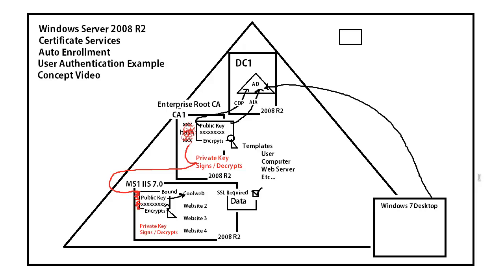In this environment, we're going to have a folder on a website called CoolWeb, and the name of the folder is Data. We have a 2008 R2 server — Member Server 1 — with IIS 7.0 installed. A certificate has been installed on this server, bound to this website, and SSL is required on this Data folder.